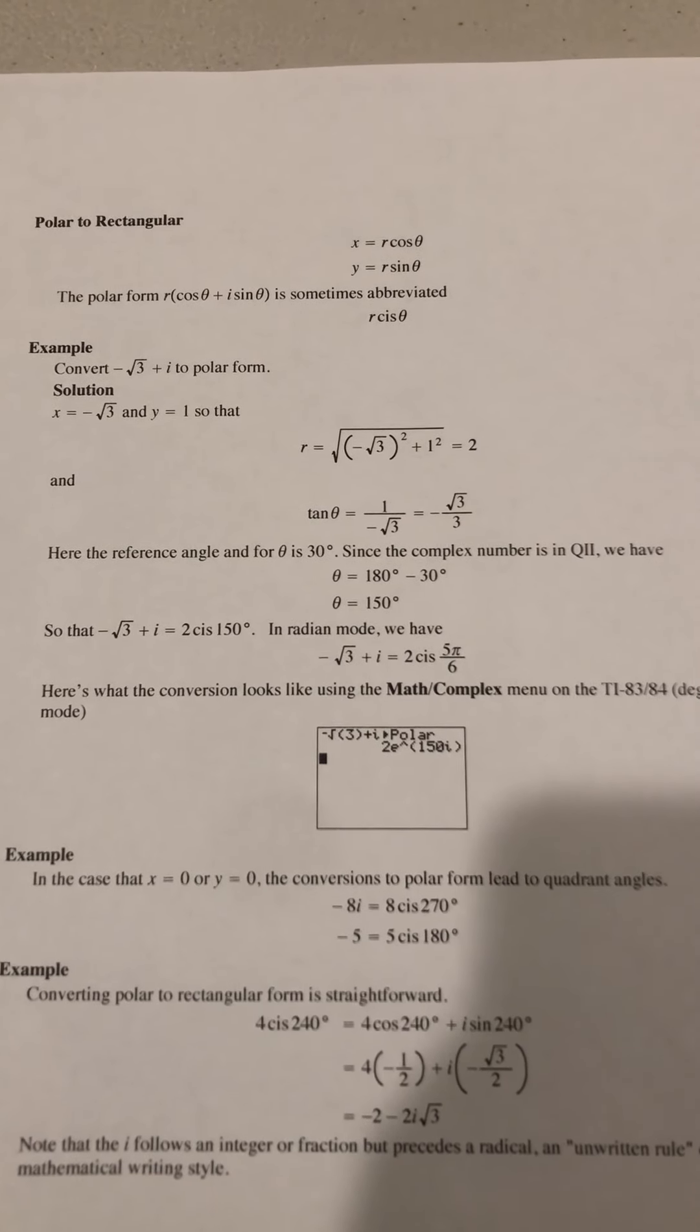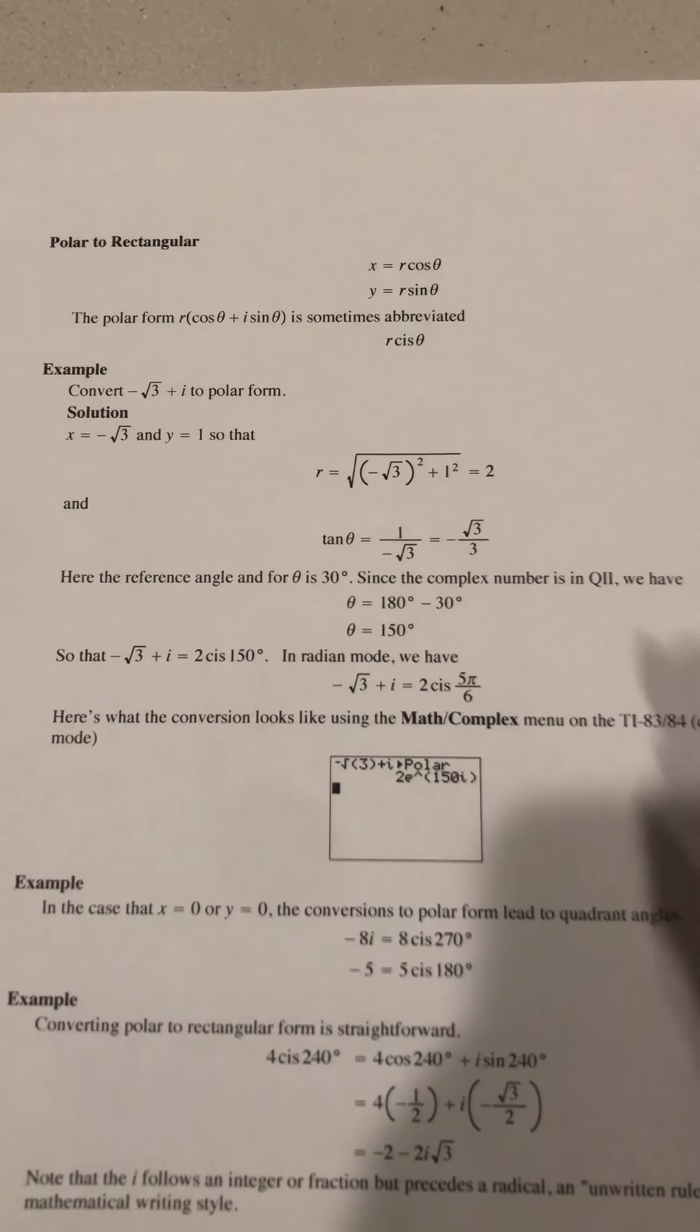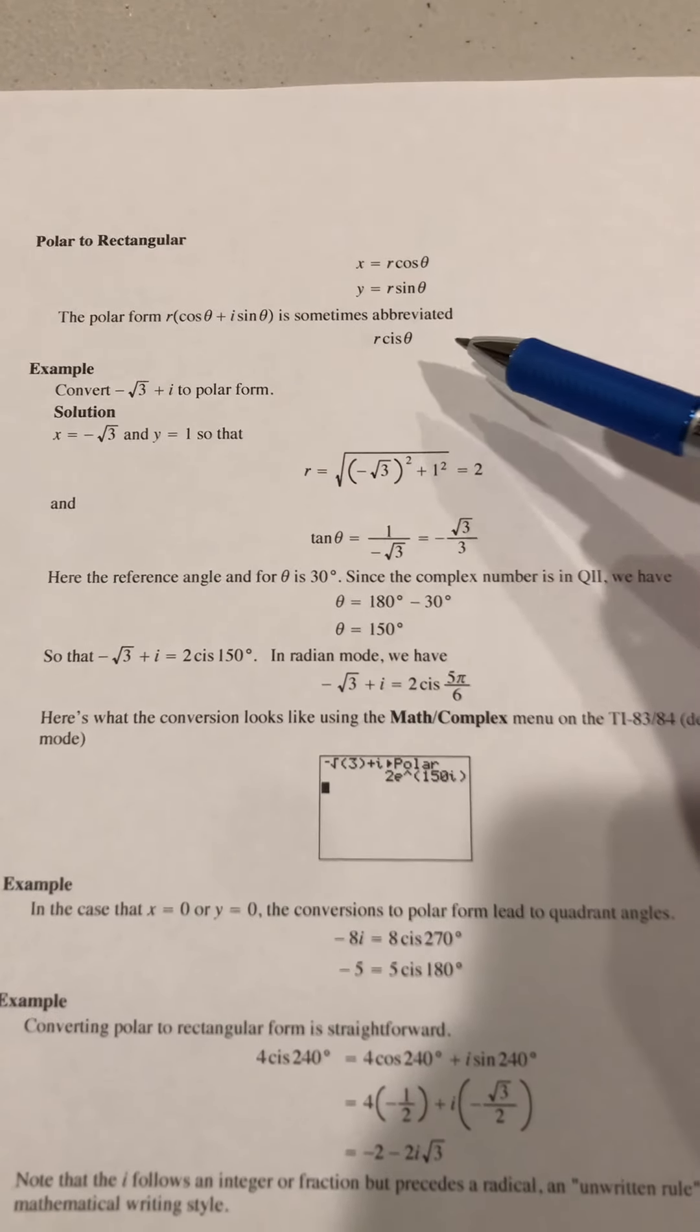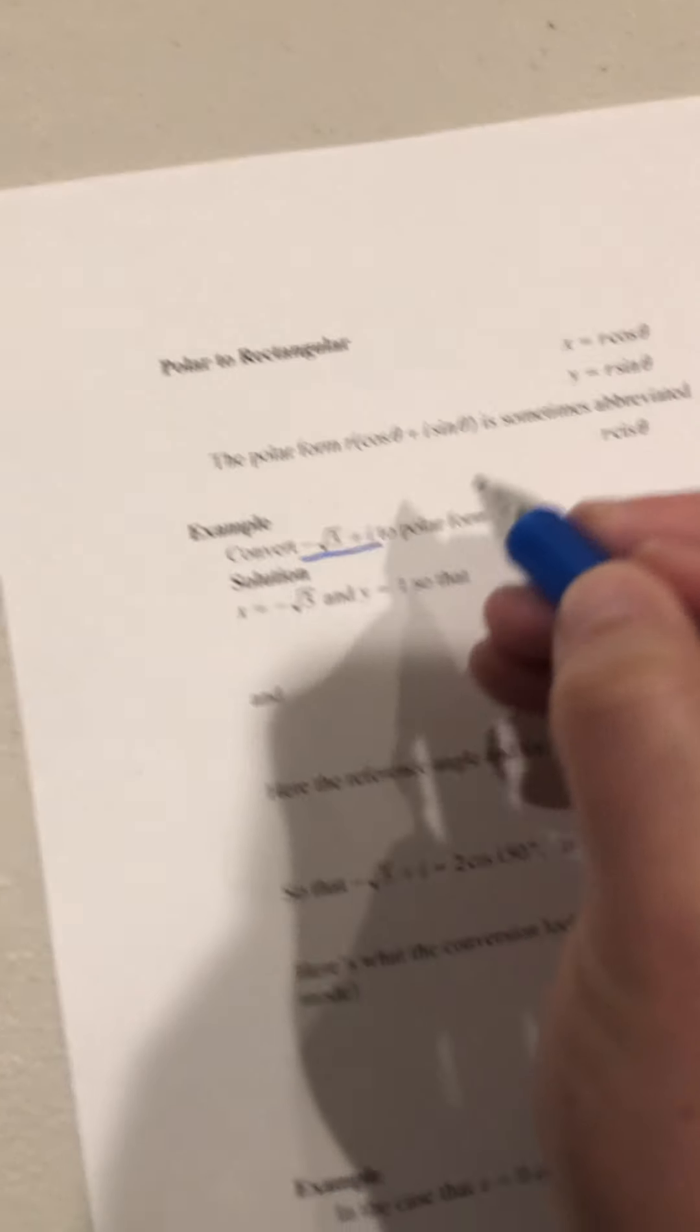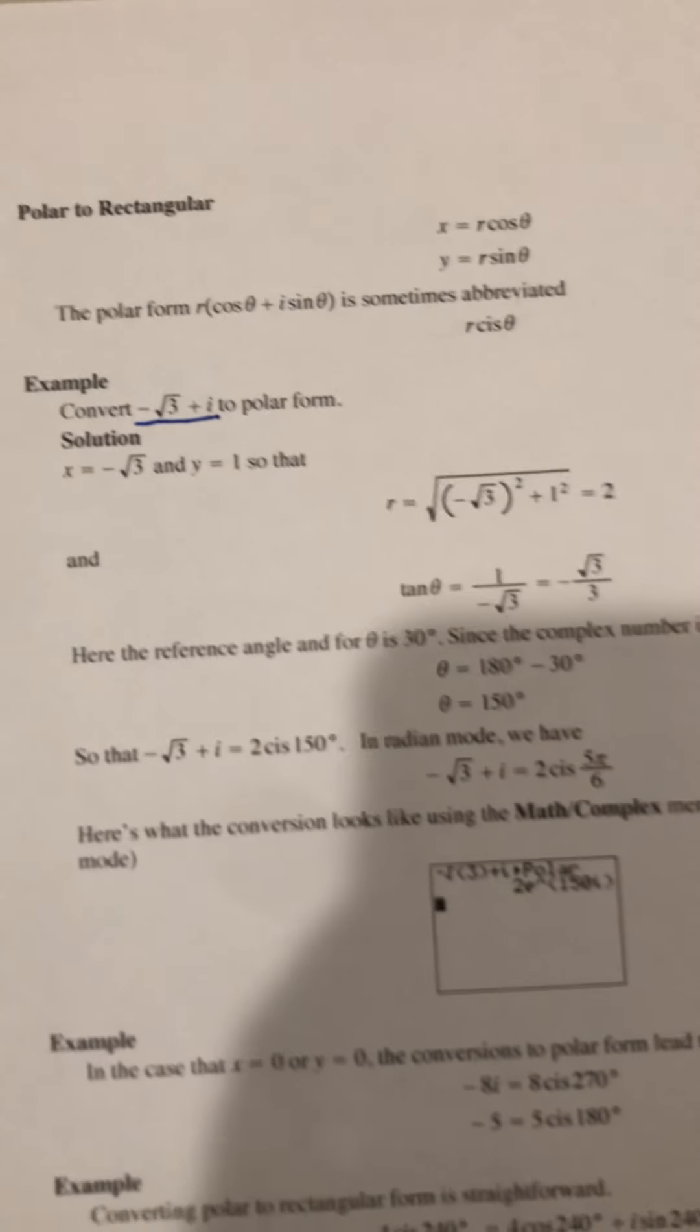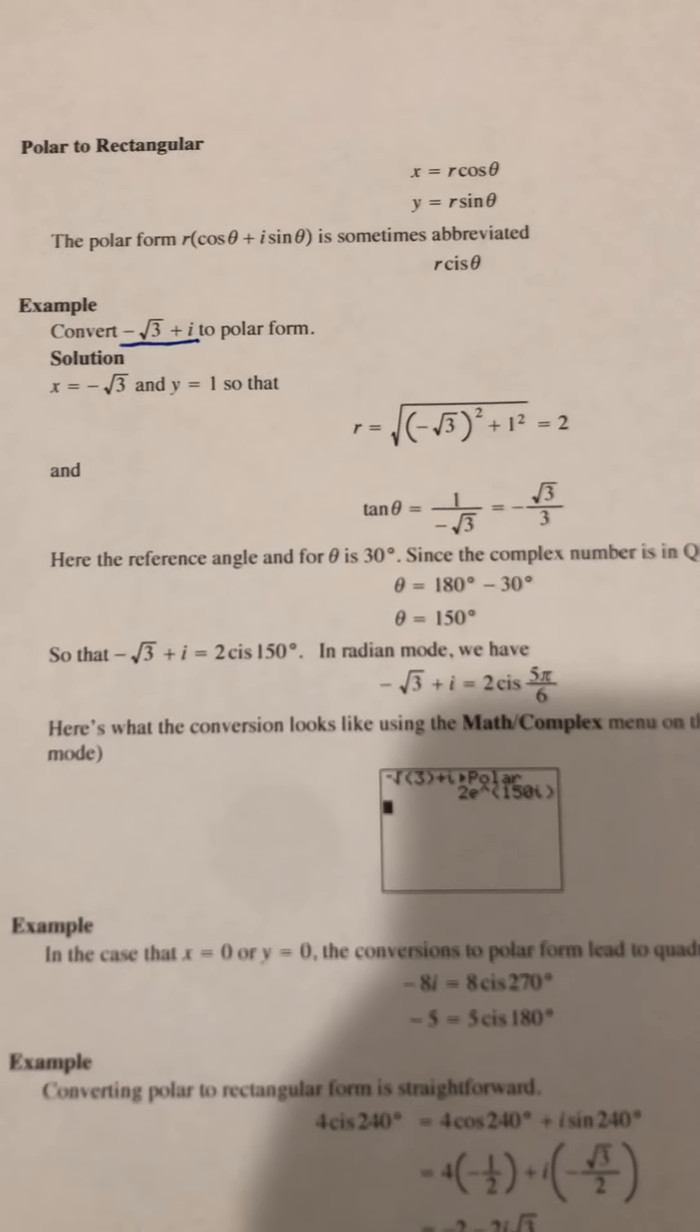Okay, if you turn your paper over, you have another example of how to go from polar to rectangular. They are converting negative square root of 3 plus i to polar form. So I'll let you read through that example on your own.